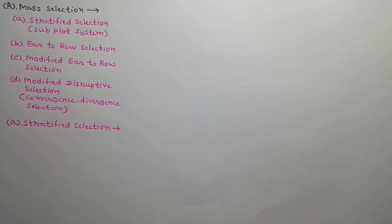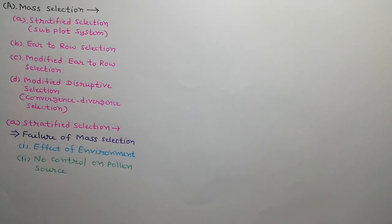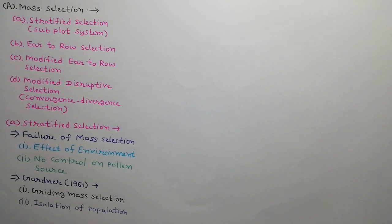First, we will discuss stratified selection. There are two reasons of failure of mass selection: effect of environment on selected parent plants and no control on pollen source. Gardner in 1961 gives two suggestions to solve this problem. Population must be grown in isolation so that pollen source can be controlled. Application of gridding mass selection so that effect of environment can be reduced. During the process of gridding, care must be taken that there must not be any type of soil heterogeneity or other environmental heterogeneity.